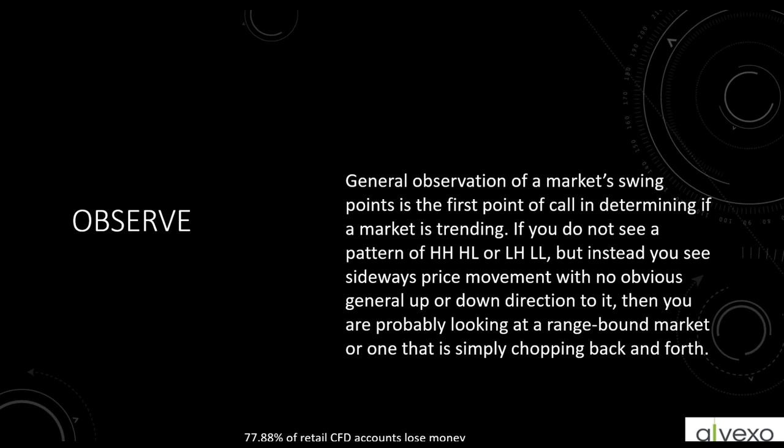It's completely random, but there are specific times in price movement when price exhibits non-random behavior. This non-random behavior is known as a trend. Most of the time, price is just chopping back and forth — it happens to be that today's price was higher than yesterday's, but it's all over the place. When price starts exhibiting this non-random behavior, we can start making trading decisions because now we have something happening that we can explain.